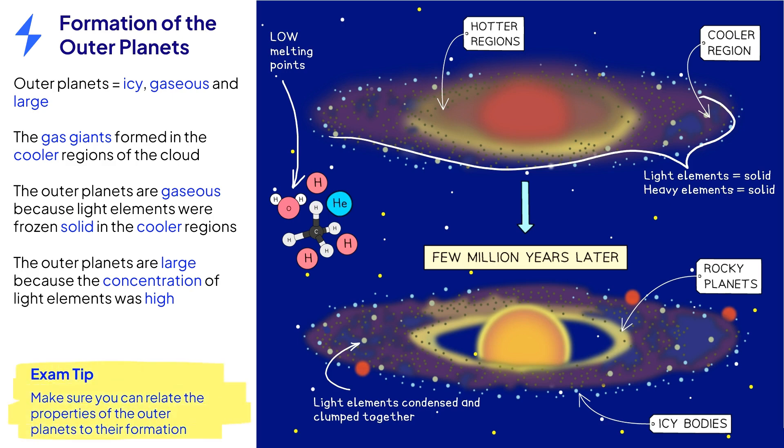When revising this topic, make sure you can explain the properties of the outer planets, for example their low densities, in terms of the accretion model.